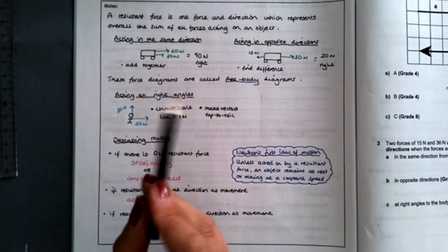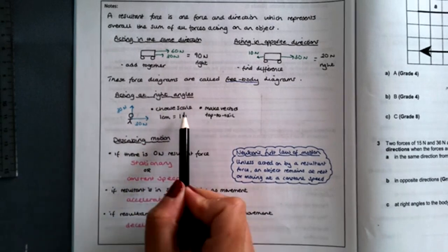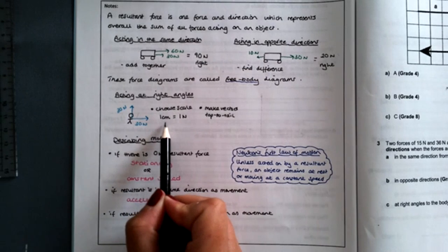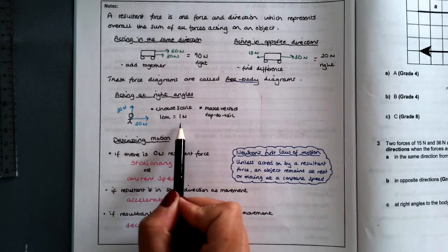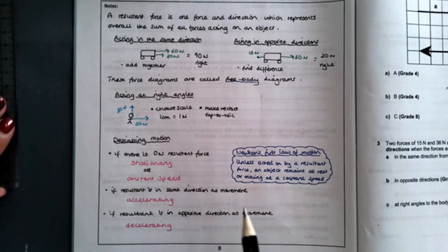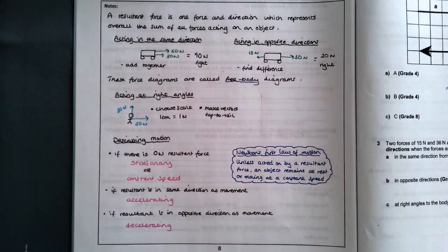To actually draw this to scale, you need to choose the scale first. Because I've got a very small space, I'm choosing one centimeter to be one newton. Then you have to make the vectors top to tail. This is something a lot of people forget to do—you can be marked down if you don't show this.